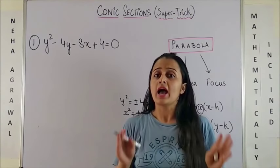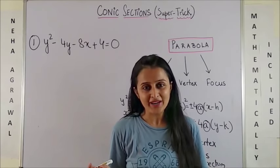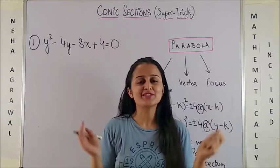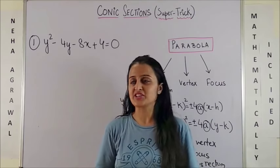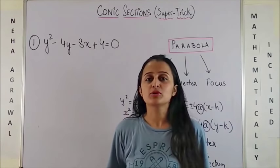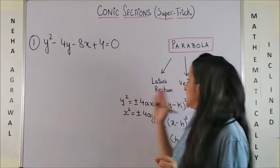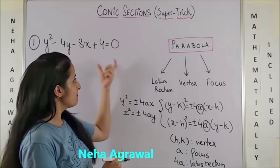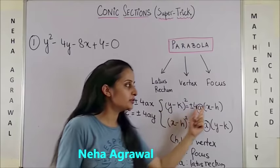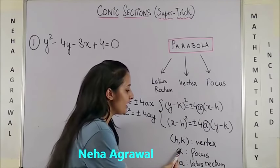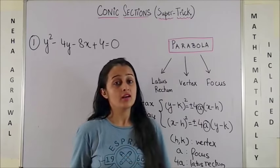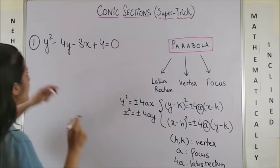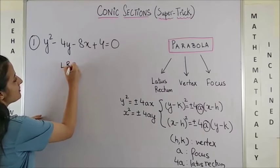Suppose we are given a general equation and you have already identified it as a parabola. If you don't know how to do that, refer to my video on the shortcut to identify a conic section. Once you have the parabola, how do you find these three components? The standard way says complete the square and bring it to standard form and compare to get h, k, and a. But our super cool fast way — just watch how we do it.